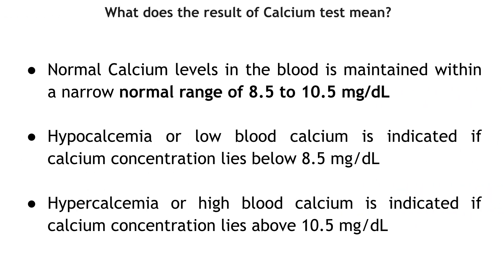What does the result of calcium test mean? Normal calcium levels in the blood are maintained within a narrow normal range of 8.5 to 10.5 mg per deciliter. Hypocalcemia or low blood calcium is indicated if calcium concentration lies below 8.5 mg per deciliter. Hypercalcemia or high blood calcium is indicated if calcium concentration lies above 10.5 mg per deciliter.